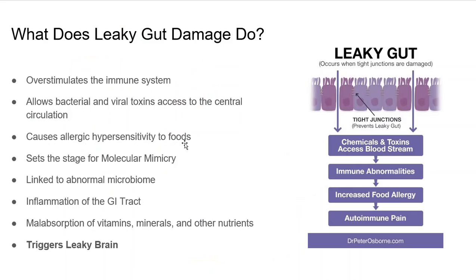One of the things that happens — the mechanism of action, if you will, of how gluten damages the brain — is it creates the scenario of leaky gut. As we're looking at this particular diagram, you can see one of the things gluten does: it overstimulates the immune system, creating an antibody response in the GI tract. That leads to damage to the cells of the GI tract opening up.